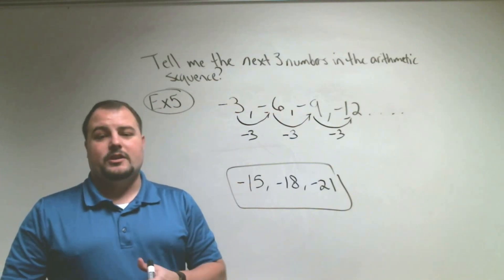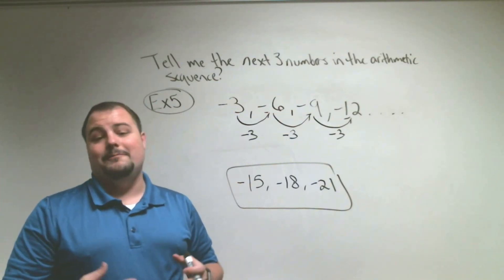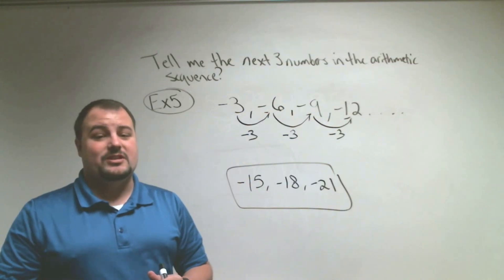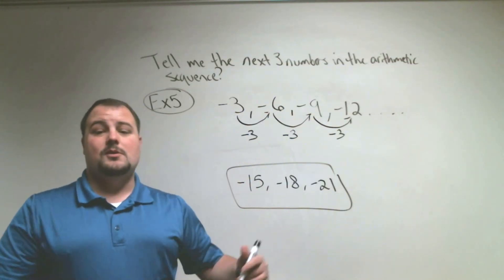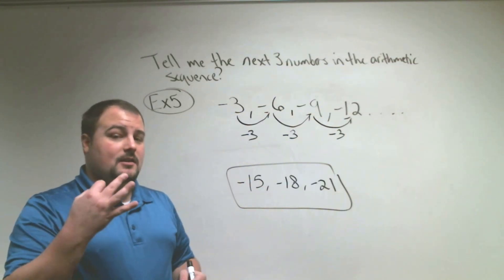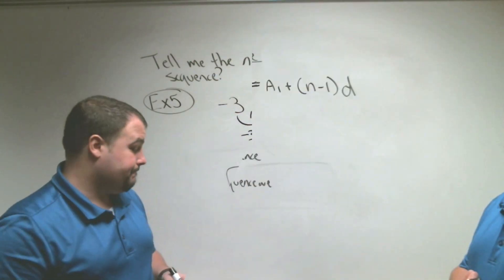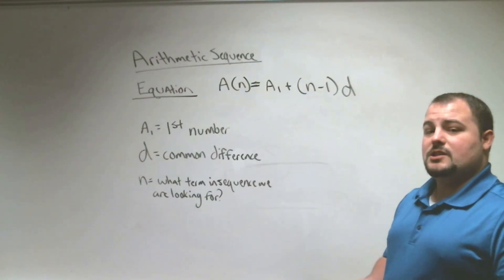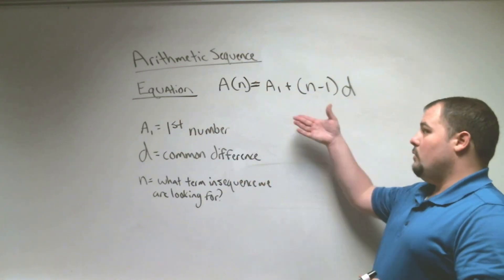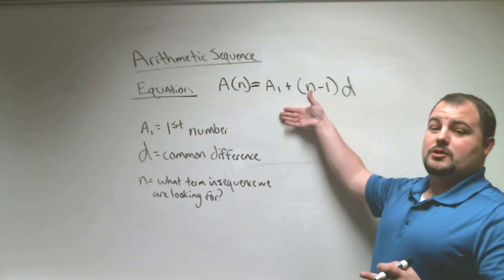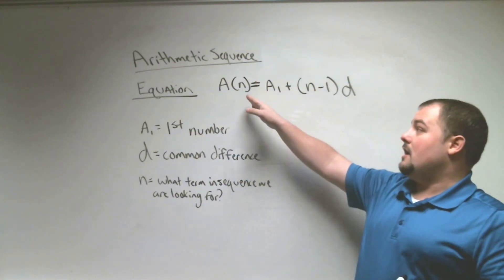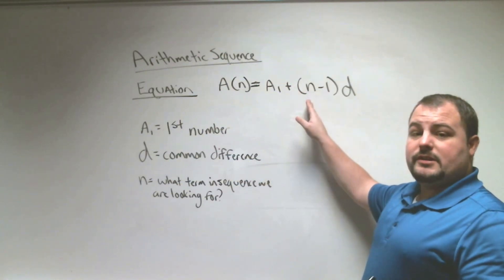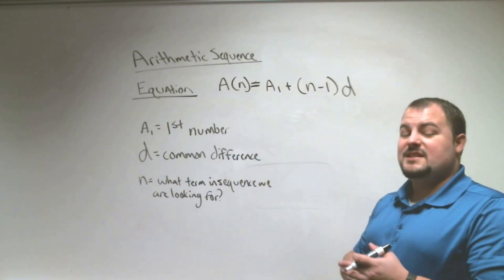Hopefully you're getting a good grasp on goal 1 — the arithmetic pattern by adding or subtracting the same number — and goal 2, telling the next three numbers. Let's move on to goal 3. In order to work with arithmetic sequences, we need to know the equation: A(n) equals A1 plus, in parentheses, N minus 1, times D.